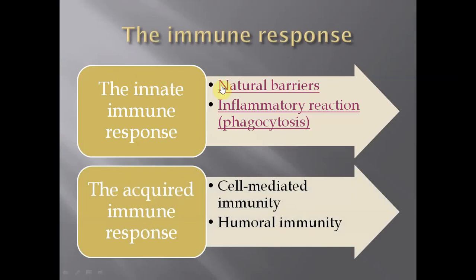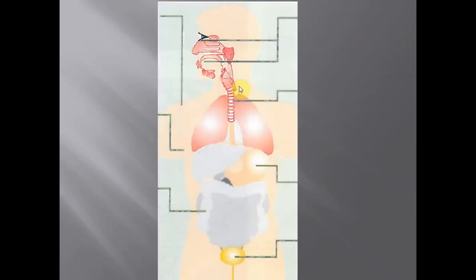What are the natural barriers? Our body is well protected against the infection of microorganisms, and it is organized to prevent these infections. The first natural barrier is the skin, which is impermeable to the entrance of microorganisms and pathogens.